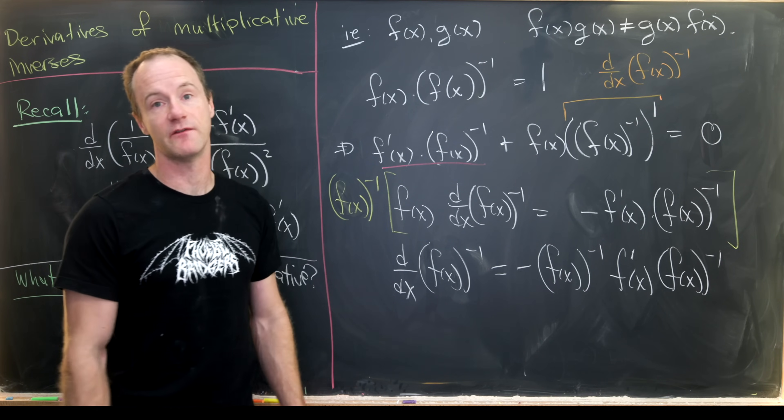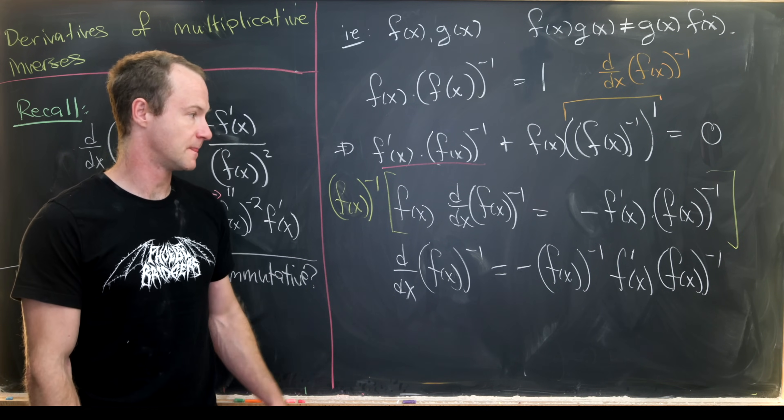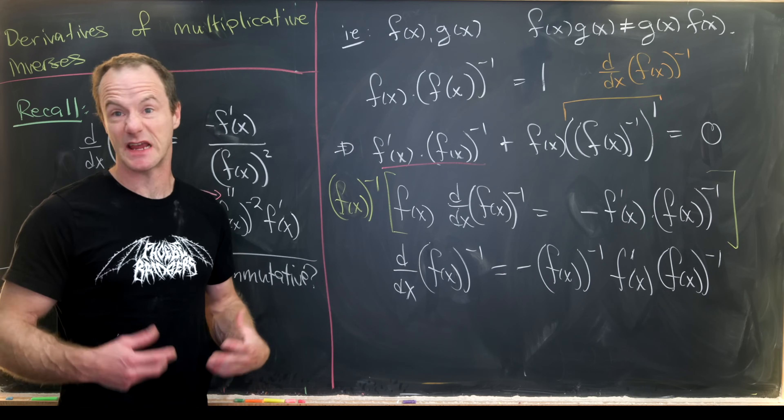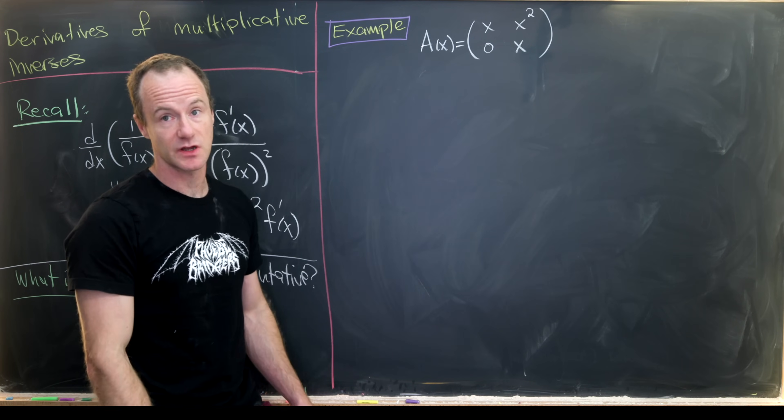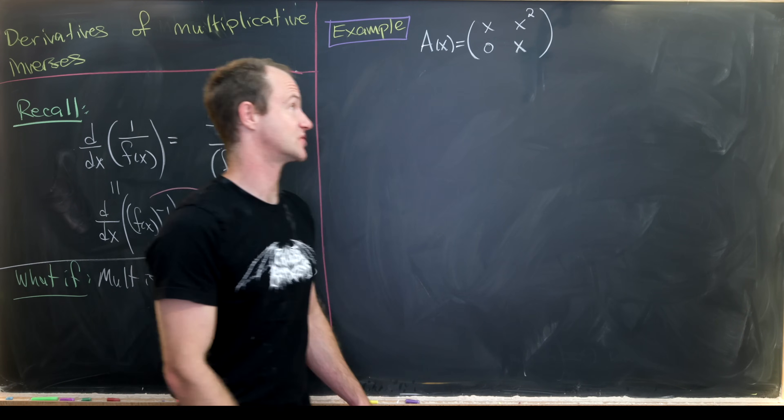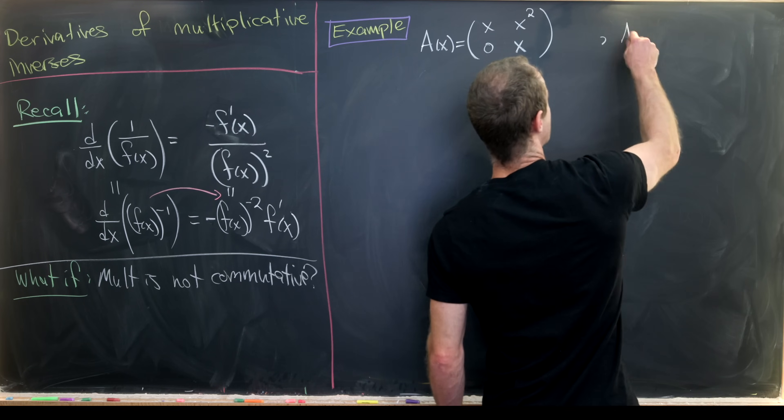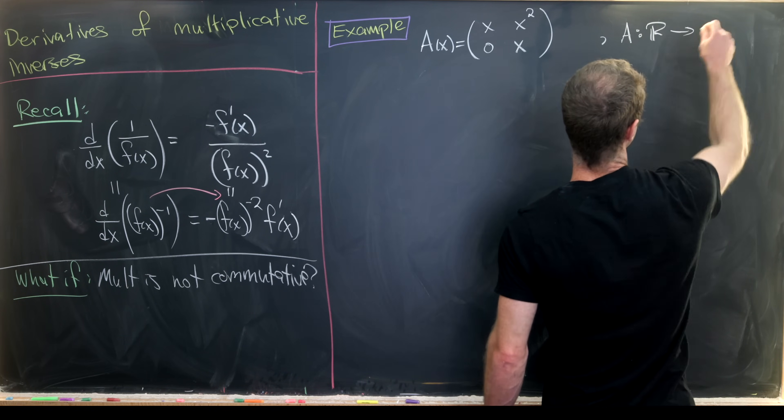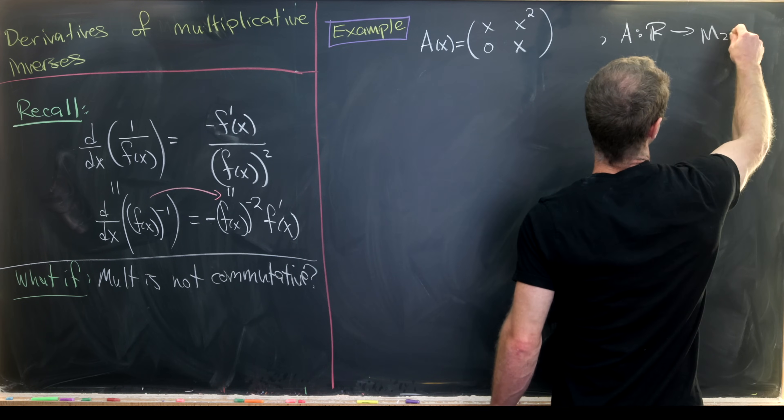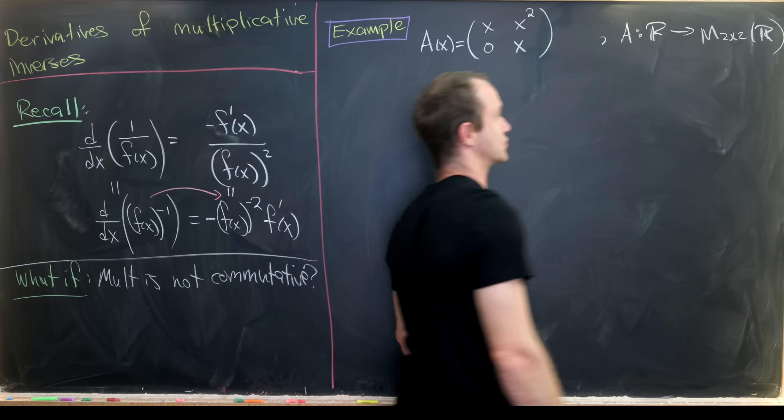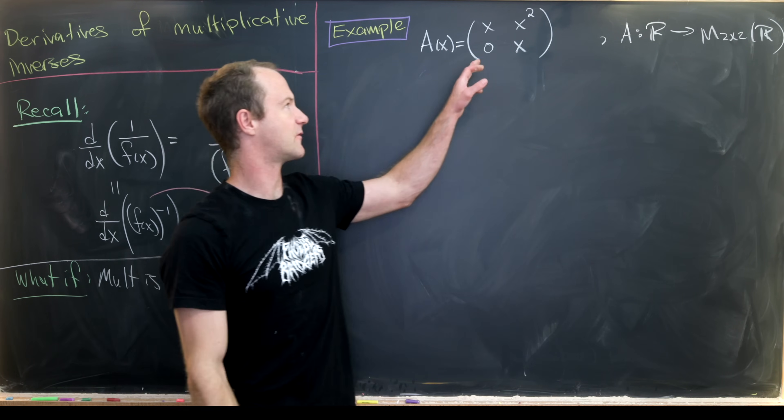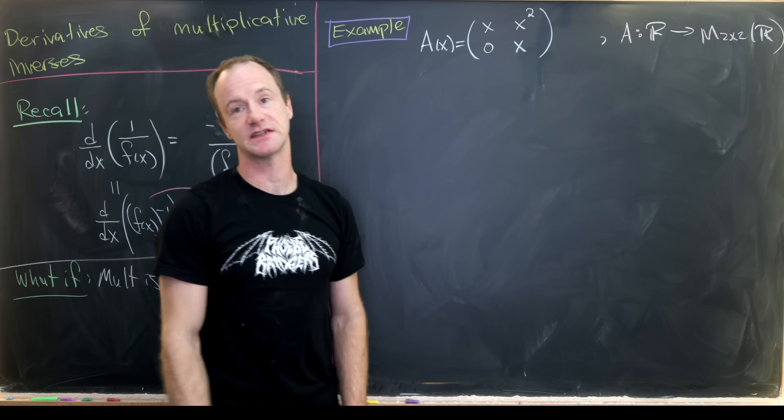Now that we've derived this derivative of a reciprocal formula, let's go ahead and look at an example where this kind of thing actually occurs. For our example, we'll look at a function which is defined as a matrix. You can think about this as a function from the real numbers to 2 by 2 matrices with real entries.